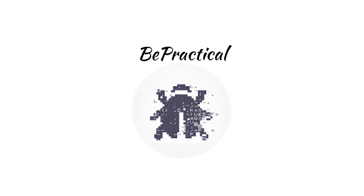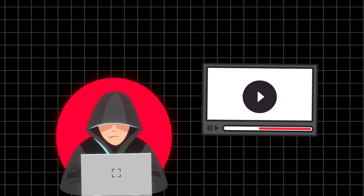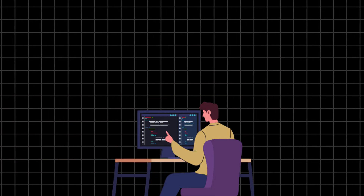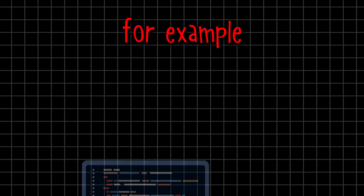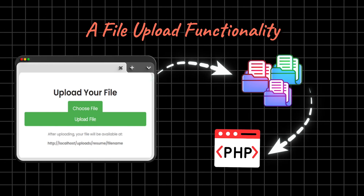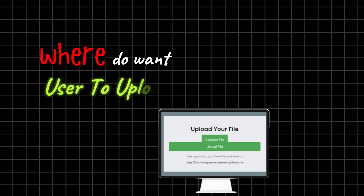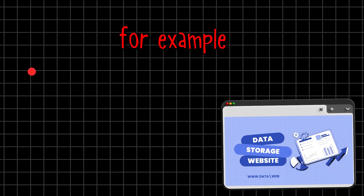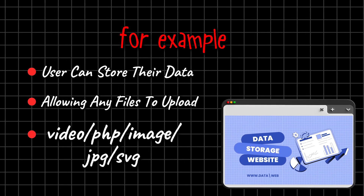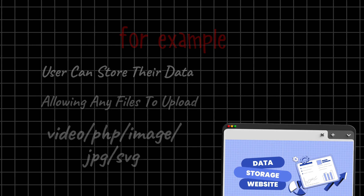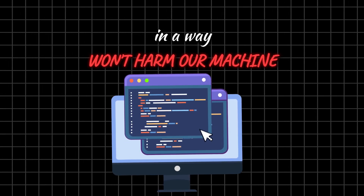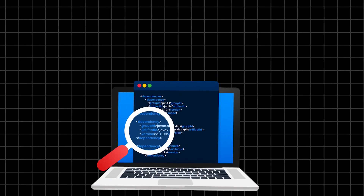Before diving deep, let's understand a little bit about what exactly we are going to do and what kind of application we are dealing with. Normally, when we talk about file upload restrictions, what developers do is block certain types of extensions. For example, if the application is developed in PHP, they block files with a .php extension. But suppose there's a scenario like a storage website where users can store any data — PHP files, video files, images, anything. The question is: how can we allow users to upload these files in a way that won't harm the server? This is where they use certain restrictions on the server to protect their application.